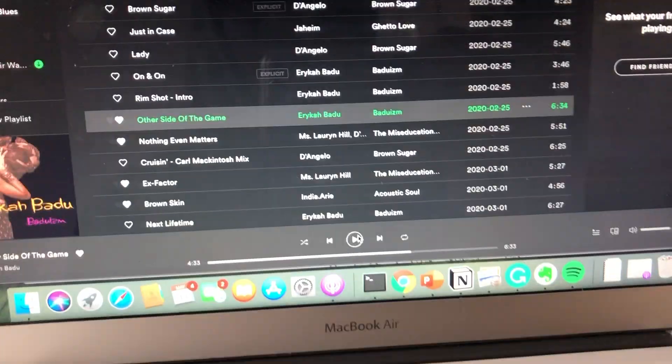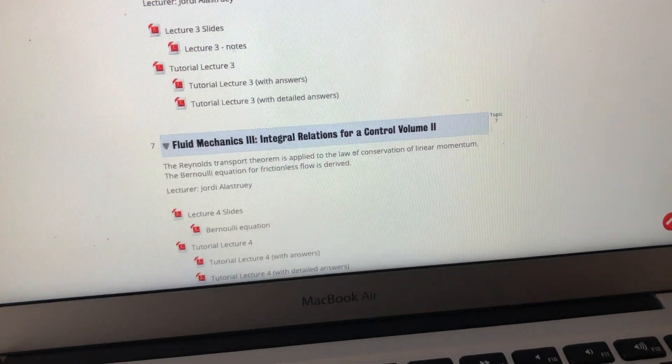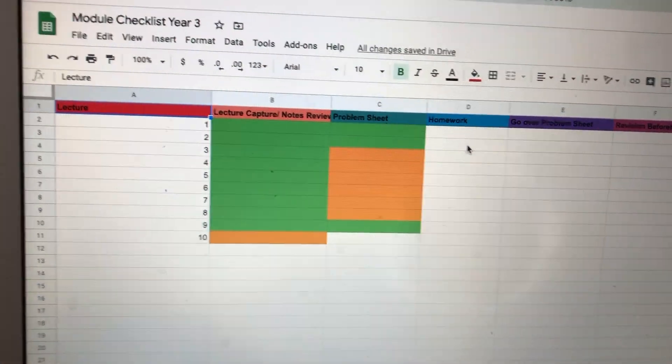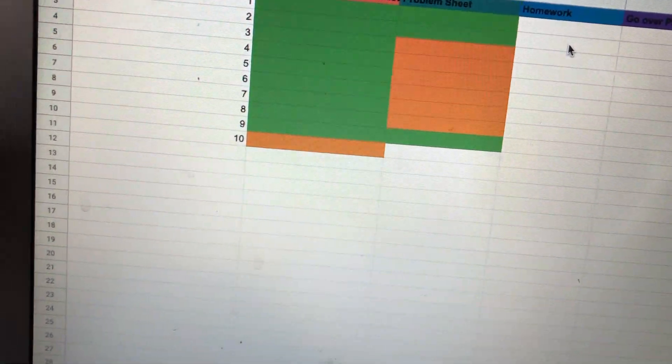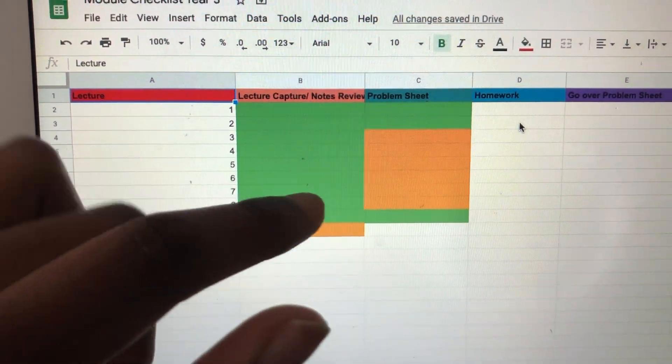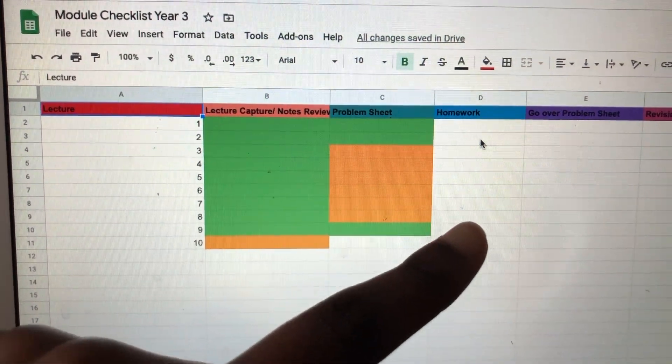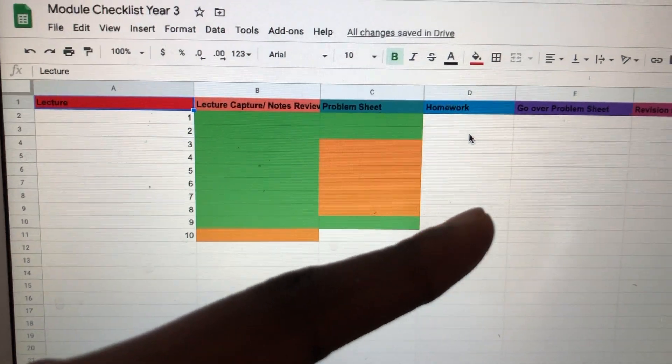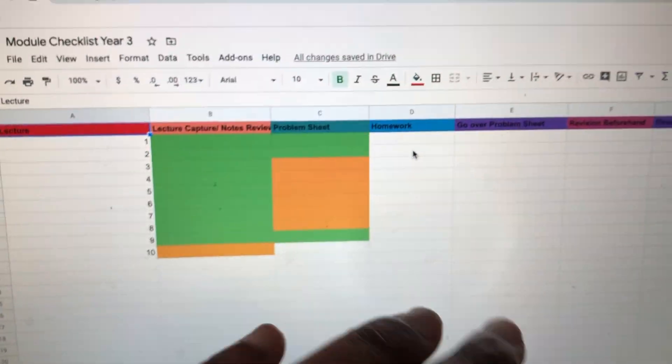To help track myself, I use a spreadsheet. This is all the lectures, lecture notes, problem sheets, homework - sometimes we get extra homework - basically just to make sure that I'm doing what I need to do for my subjects.